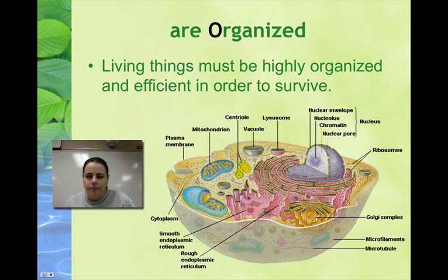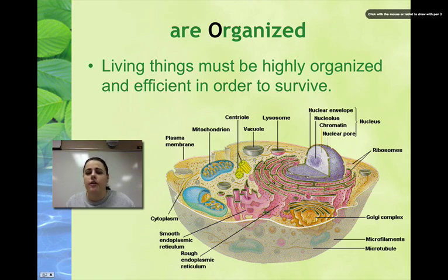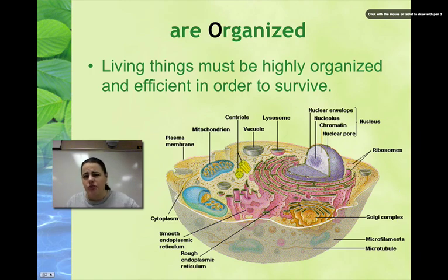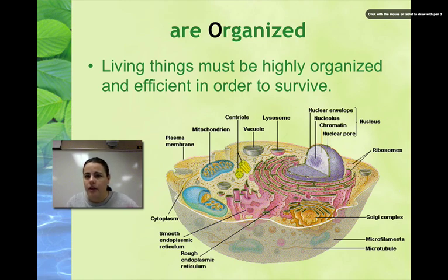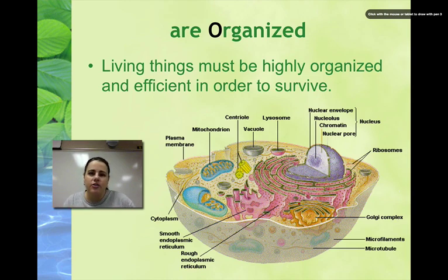Looking at this cell, it has a nucleus, a rough ER, smooth ER, the Golgi, and all these cell parts inside. Each one of those cell parts has a specific job, and if one of those parts doesn't do its job, the whole cell could potentially not function and die. High organization is necessary for survival.